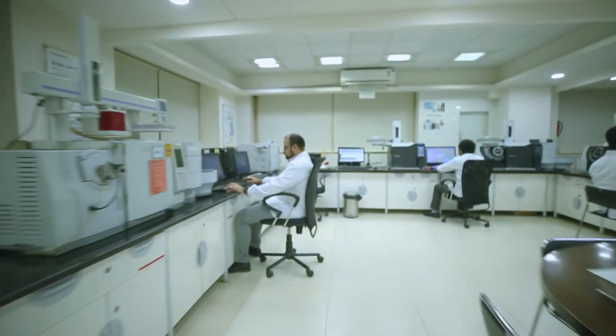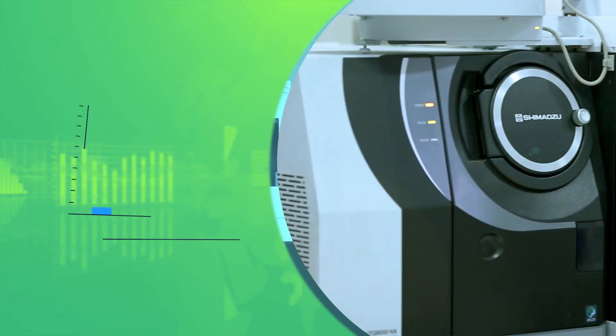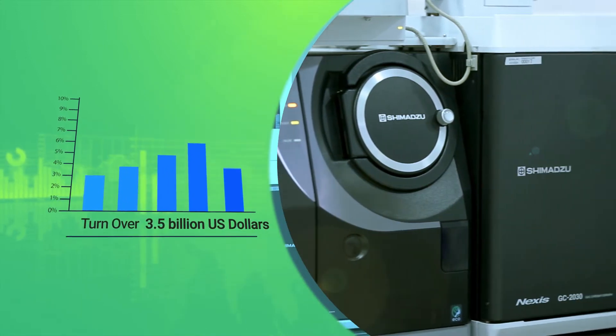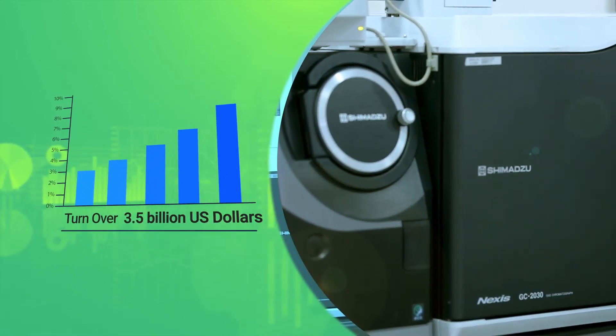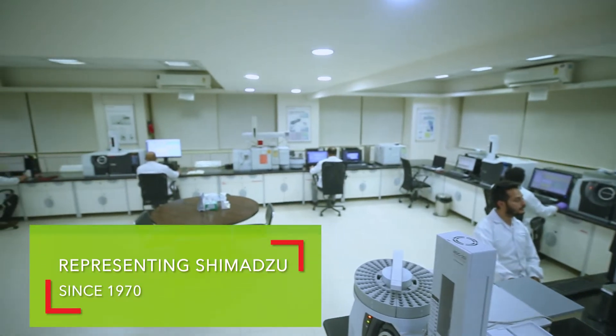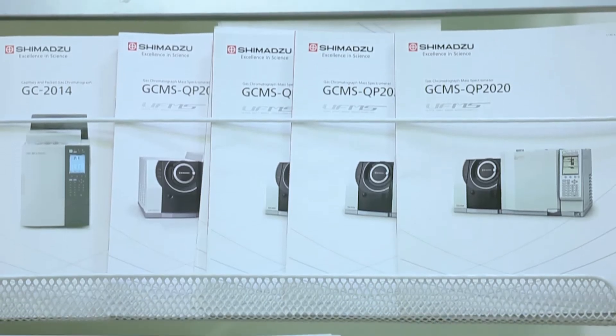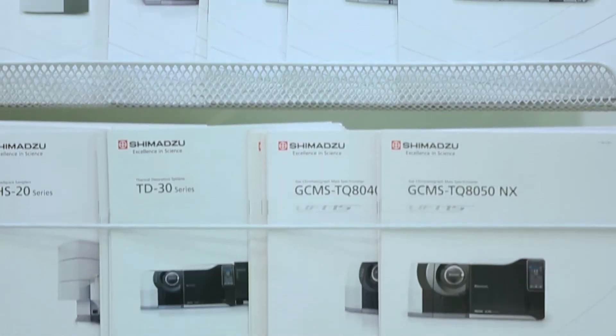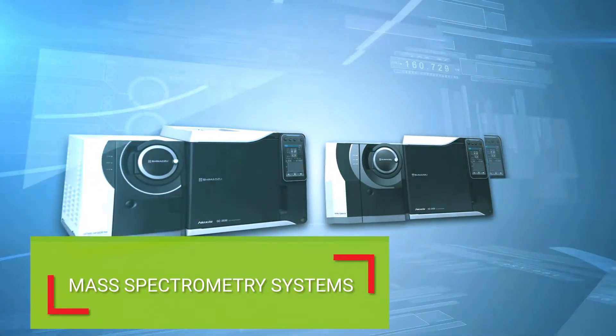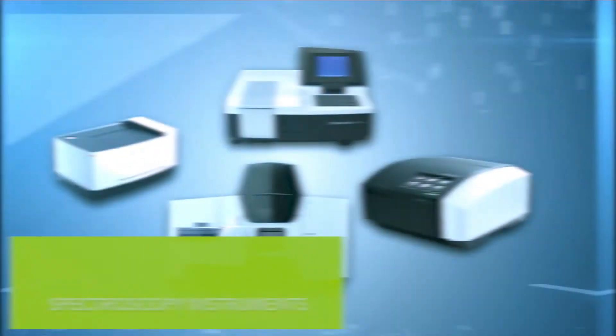Shimadzu is one of the world's foremost instrumentation companies with a turnover of 3.5 billion US dollars. Toshven has been representing Shimadzu since 1970 for their wide range of analytical instruments including mass spectrometry systems, chromatography instruments, spectroscopy instruments, and material characterization systems.